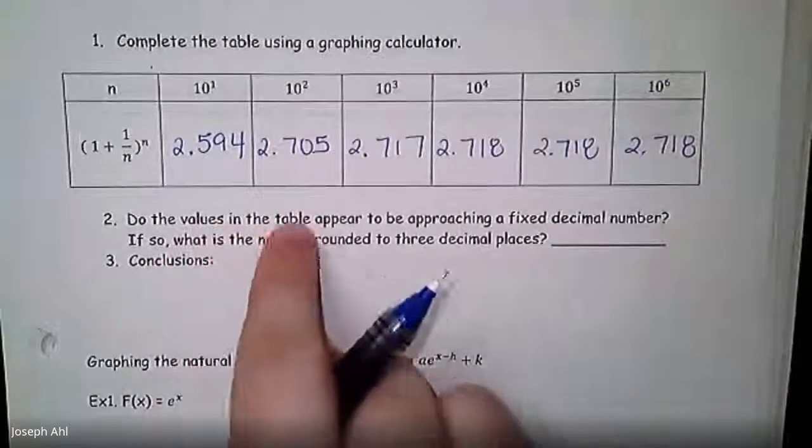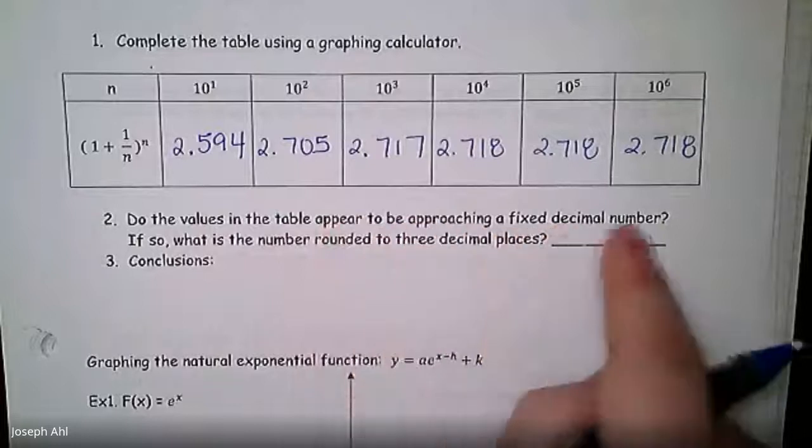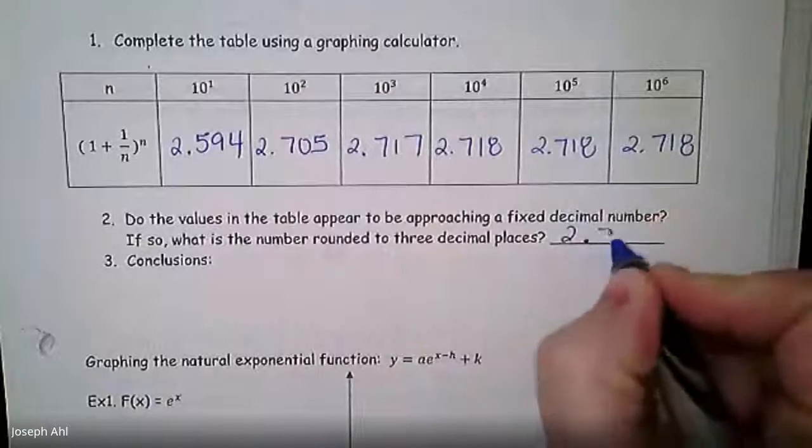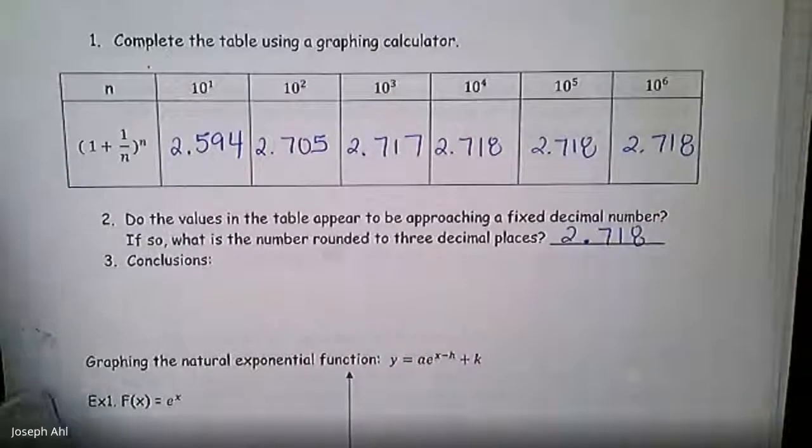Do the values in the table appear to be approaching a fixed decimal number? Well, I think they do. If so, what is the number rounded to three decimal places? It is 2.718.